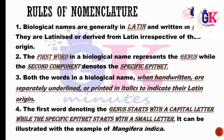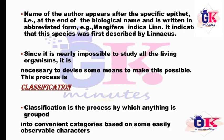The binomial system has two parts: the first part is the genus name and the second part is the species name. Both words in a biological name, when handwritten, are separately underlined, or printed in italics, to indicate their Latin origin. The first word denoting the genus starts with a capital letter, while the specific epithet starts with a small letter. The name of the author appears after the specific epithet in abbreviated form — for example, Mangifera indica Linn.